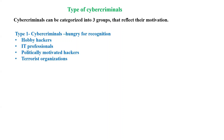The third sub-type is politically motivated hackers — hackers who perform hacking activity with a political motivation. The fourth sub-type under type one is terrorist organizations, who perform cyber crime activity and are also categorized as type one cyber criminals.